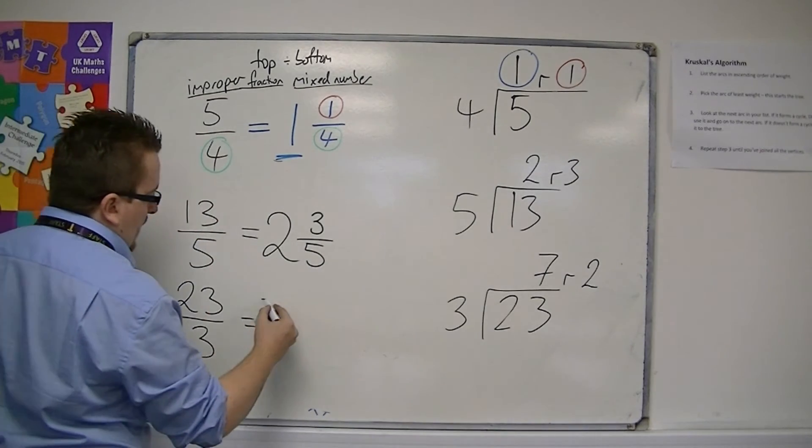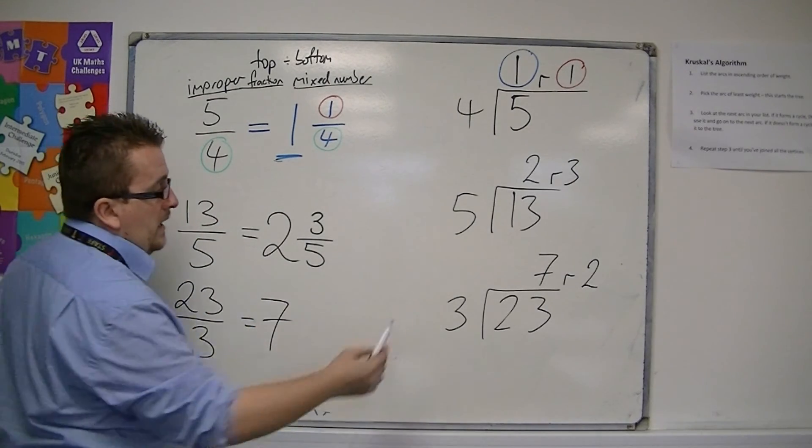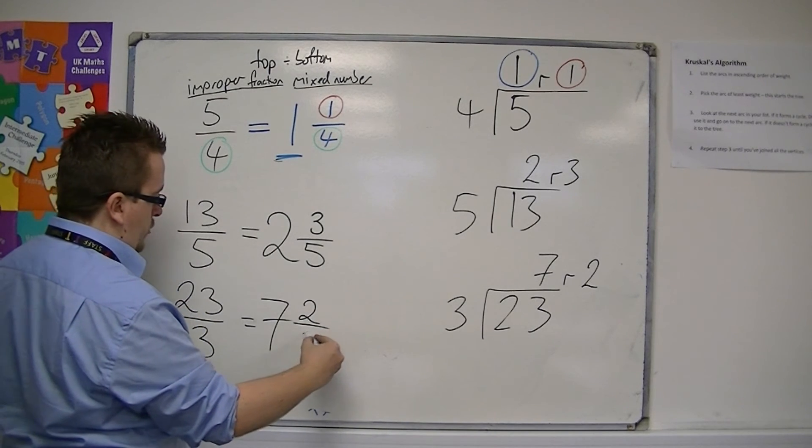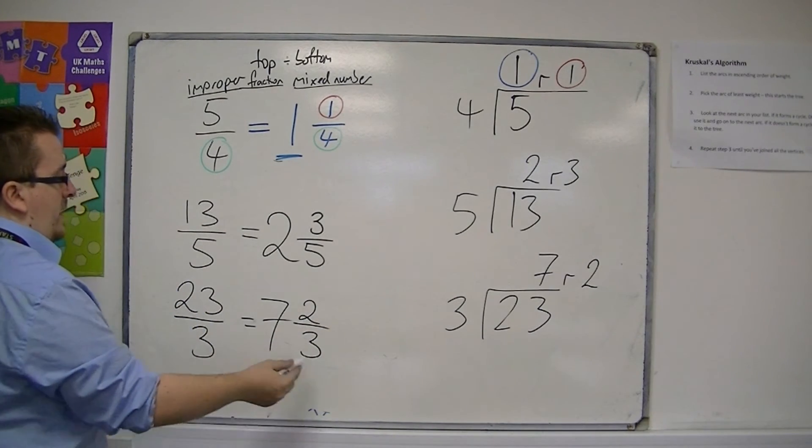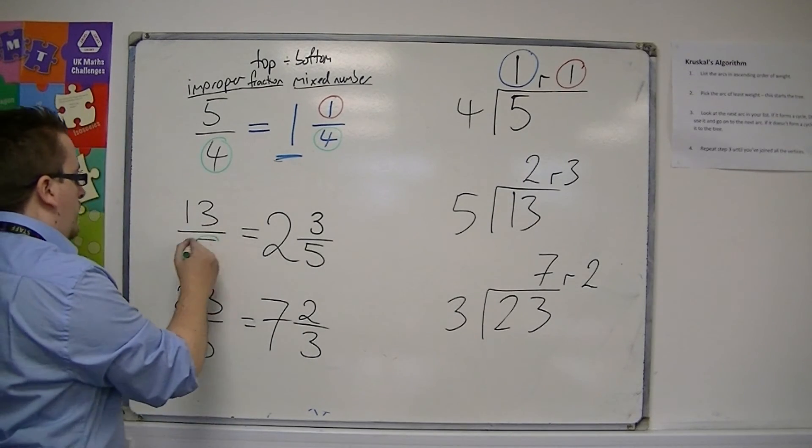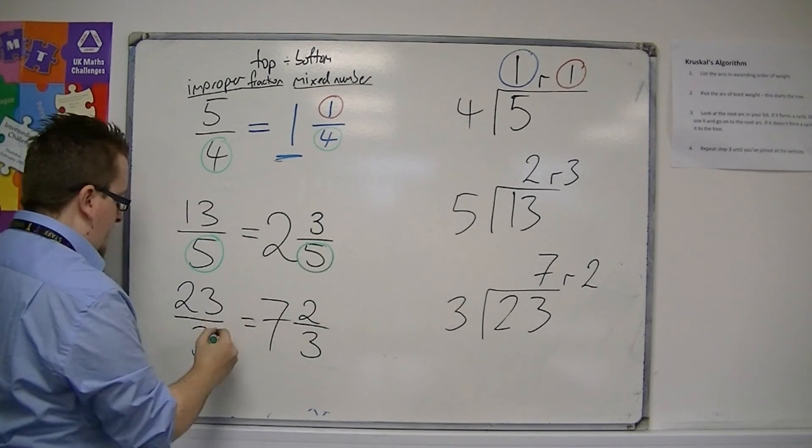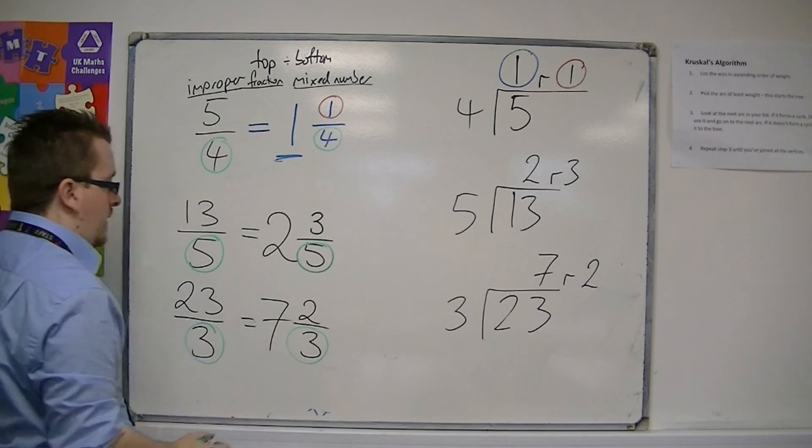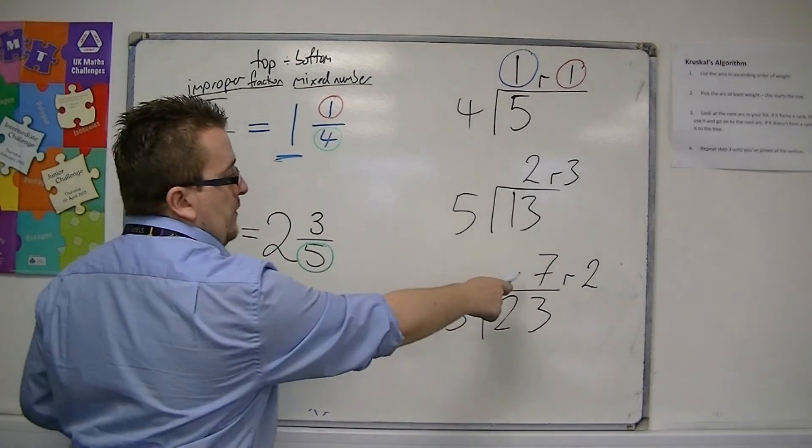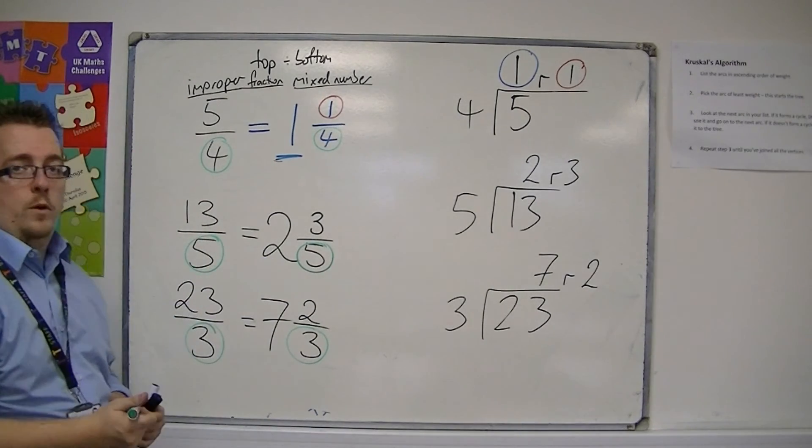So the 7 is the large whole number, and the remainder is the numerator, the top of the new fraction, with 3 remaining the same. So you can see that the denominators stay the same, and the whole number and the numerator is based on the division, the whole number and the remainder.